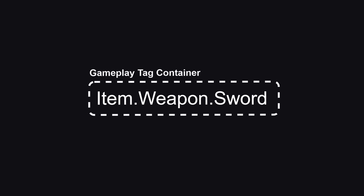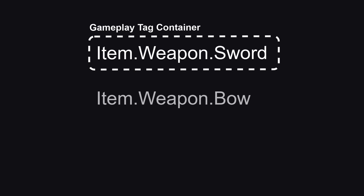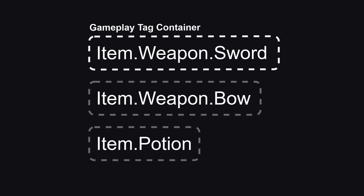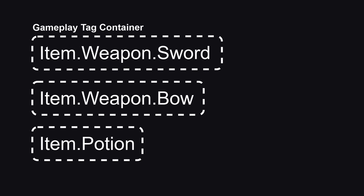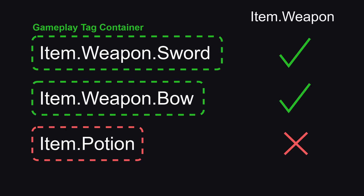Gameplay tags can be stored in a gameplay tag container. This allows you to make different checks. For example, you can create tags like item.weapon.bow and item.potion and store them in separate gameplay tag containers. Now you can check if these containers contain an item.weapon tag, which means you don't care if it's a bow or a sword — you just want to know if it's a weapon or not.